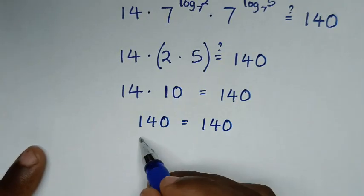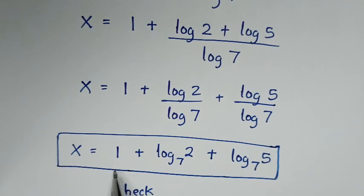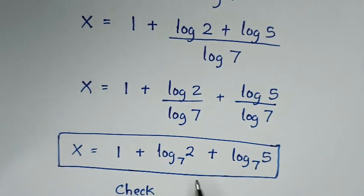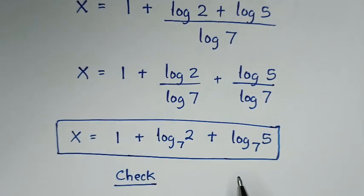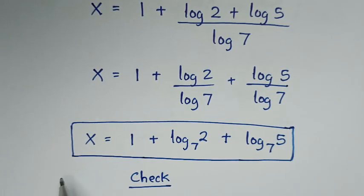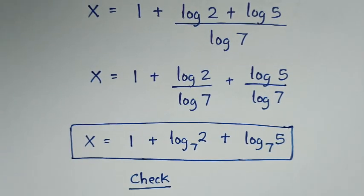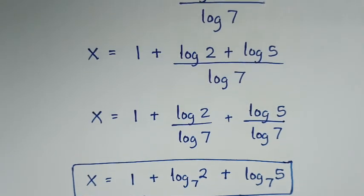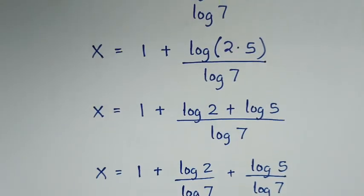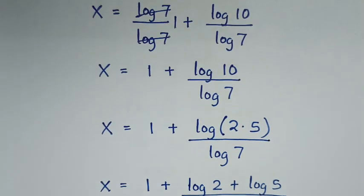So left side and right side are equal, then it is true. The value of x is 1 plus log base 7 of 2 plus log base 7 of 5. This is the final answer. Thank you. Subscribe to my channel and see you in the next video.